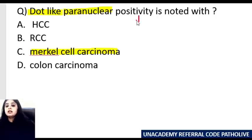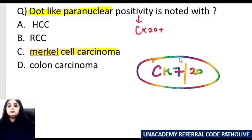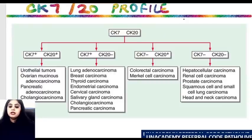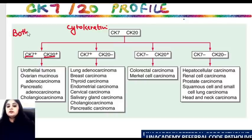This positivity refers to CK20 positivity. The very famous CK7/CK20 profile is being asked a lot in the exam. I'll take you through the entire table. CK stands for cytokeratin — it's an intermediate filament. When CK7 and CK20 are both positive, that is commonly seen in association with bladder cancer — urothelial carcinoma. There are certain tumors in this table you get maximum questions from.